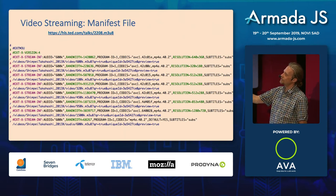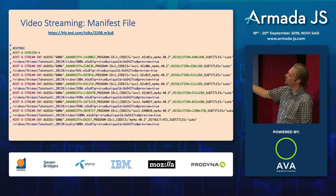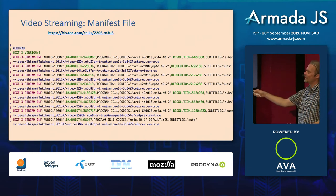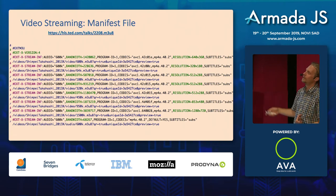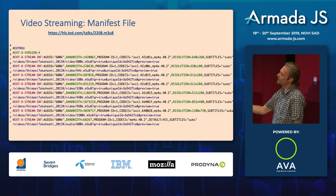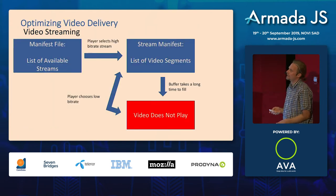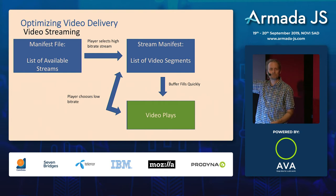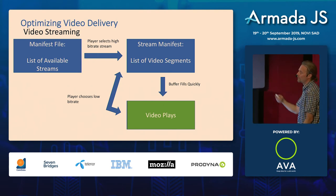Each track in the manifest lists the bandwidth, program ID, and resolution. The first track is 1.4 megabits per second at 640x360. Most players start with the first stream if they don't know the network speed. If that stream is too high for the connection, the player has to switch to a lower one — like 228 kilobits per second. This switching takes time, adding to startup delay. Since longer startup times cause users to abandon, we want to avoid this extra step at the beginning.